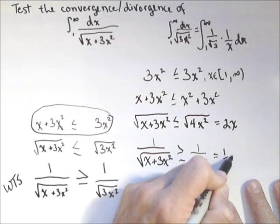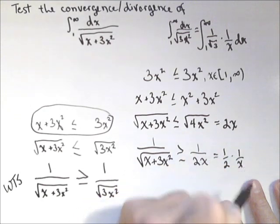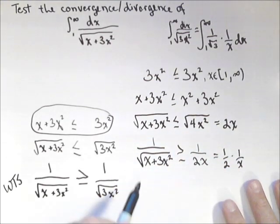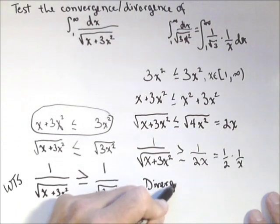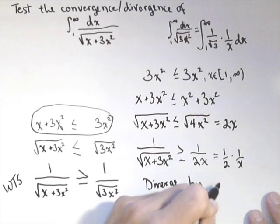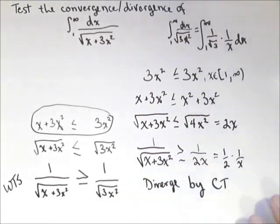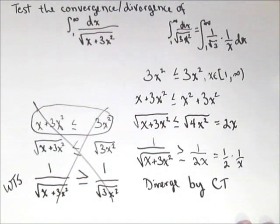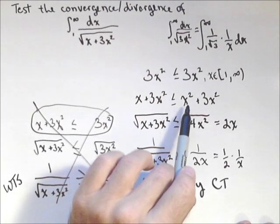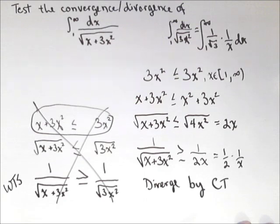This is one half times something we know diverges. Therefore, this thing must diverge by the comparison test. And we got it. So this did not work for us initially. That's okay, don't give up. We're able to make it work for us by a nice little trick here—adding x to one side, adding x squared to the other side.